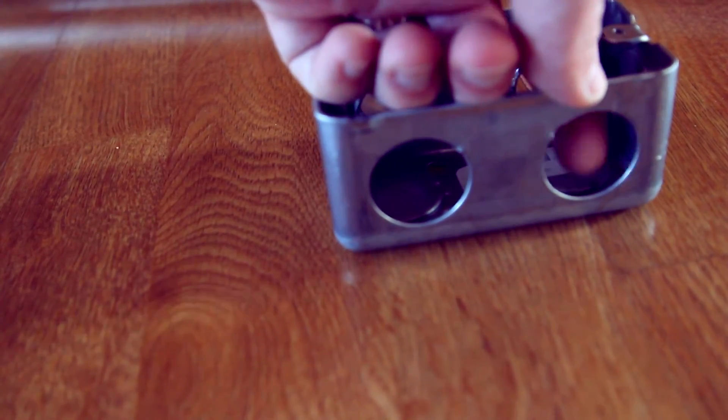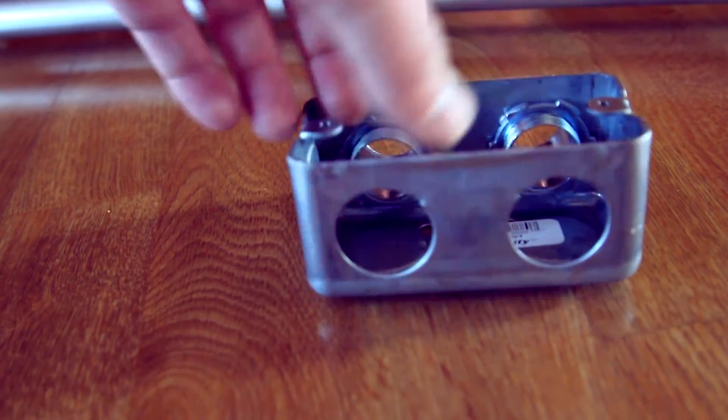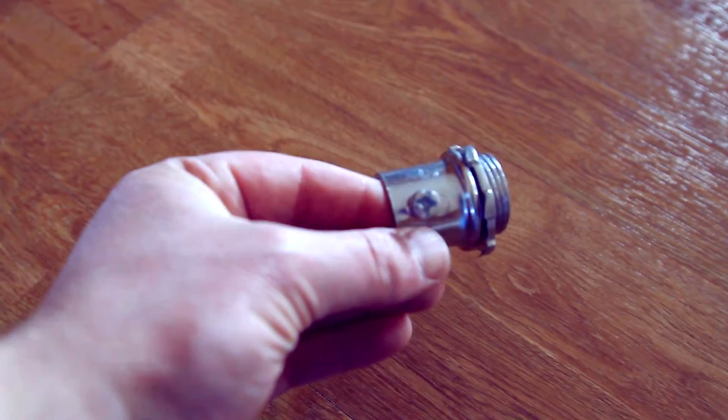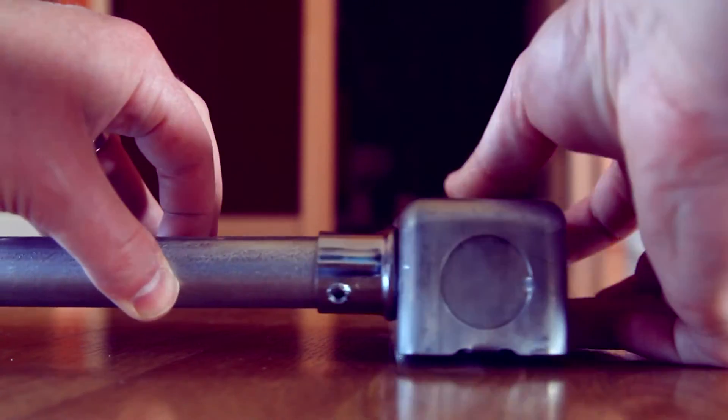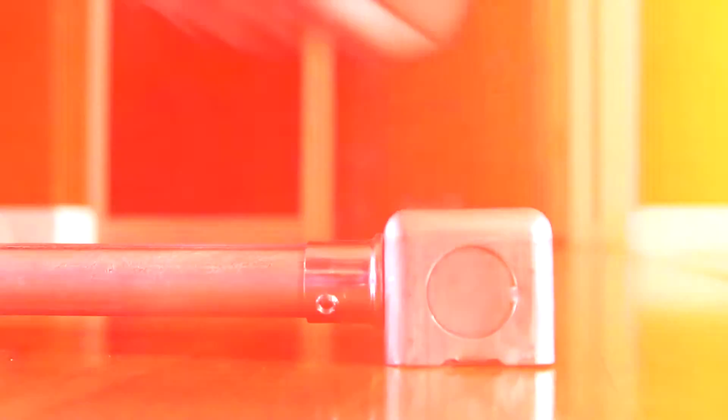Next you're going to take the electric outlet boxes and punch the holes out. After you punch the holes out you're going to get your EMT and thread it right on in. You're going to want to slide your conduit right into it and then get a screwdriver and screw it right on one end.